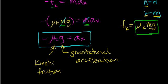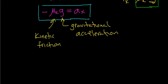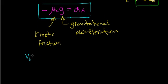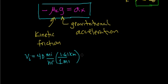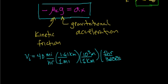Now that we've found the acceleration — the rate at which the car slows down — we can figure out how far it will travel while braking. The car's initial velocity was 40 miles per hour. Converting to SI units: 40 mph times (1.61 km/mile) times (1000 m/km) divided by (3600 s/hr) gives an initial velocity of about 17.9 meters per second.